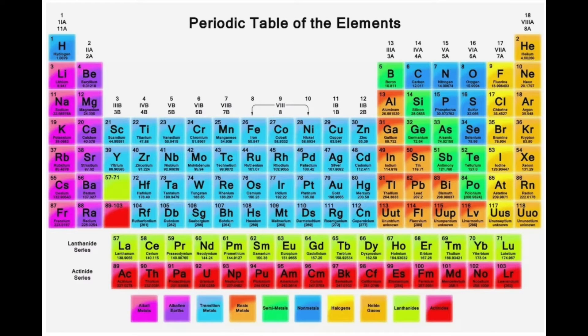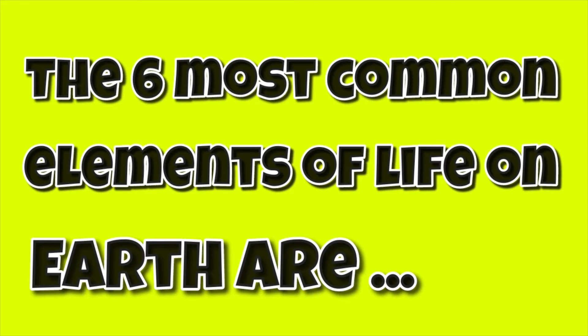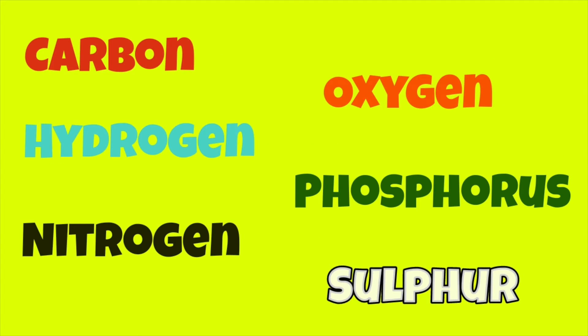The 6 most common elements of life on Earth are Carbon, Hydrogen, Nitrogen, Oxygen, Phosphorus, and Sulfur.